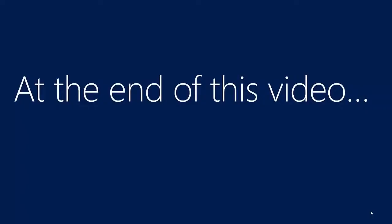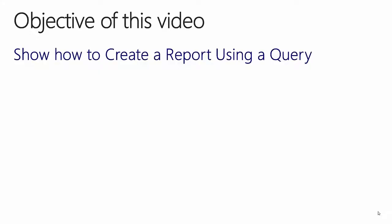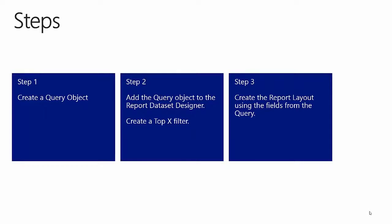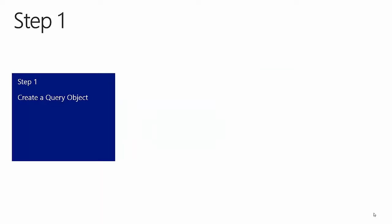At the end of this video, you will understand how to create a report based upon a query object. The objective is to show how to use a query object as a data source in a report. I will do this in three steps: in step one, we will create a query object for the customer sales data; in step two, we will use the query to build the dataset for the report; and in step three, we will build the report layout based upon the fields from the query object. Let's get started with step one.